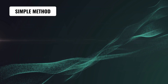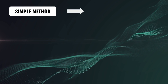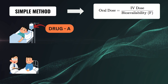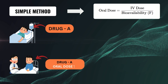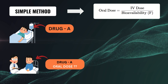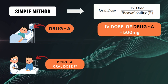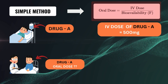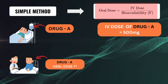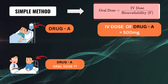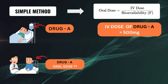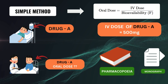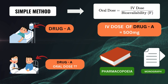Let's see how the calculation is done in the simple method. The formula is: oral dose equals IV dose divided by bioavailability. Let's say we are giving a drug to a patient, the patient got stabilized, and the doctor decided to shift from IV to oral. The IV dose is 500 mg. For bioavailability, we refer to an official book like the Indian Pharmacopeia and search for the drug's monograph, which contains all information about the drug.